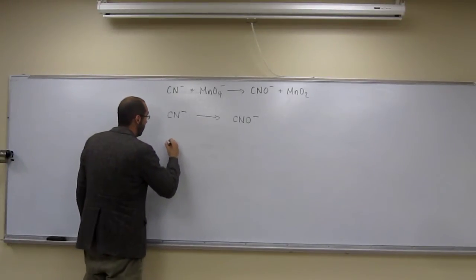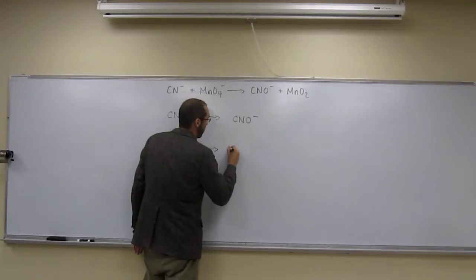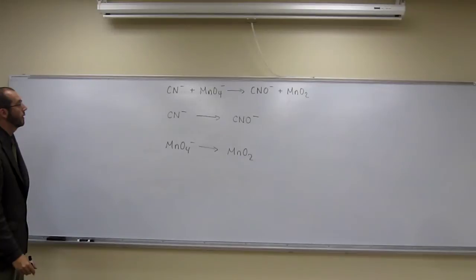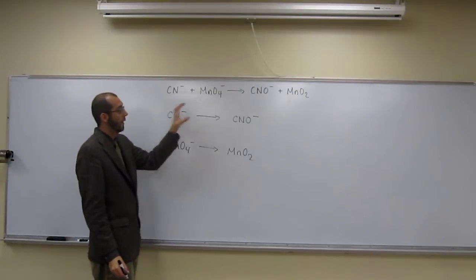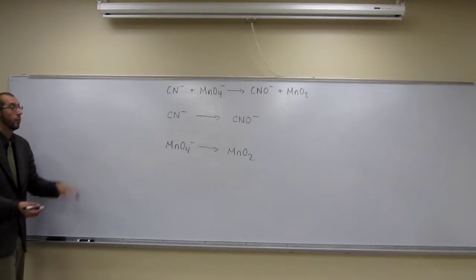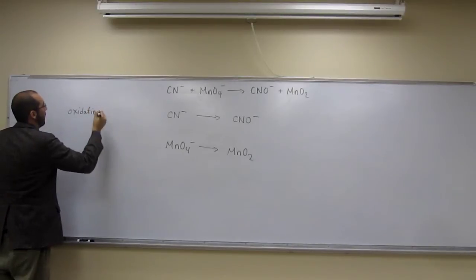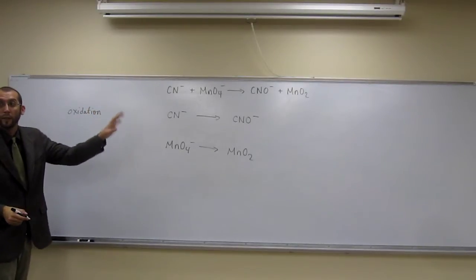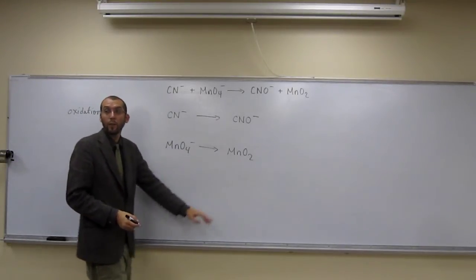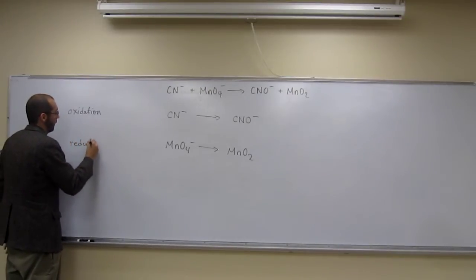So that's one of the reactions. The other one — the permanganate going to manganese dioxide. Hopefully you can see we're adding oxygens here, so that would be an indication of an oxidation reaction. I'm going to put 'oxidation' here. The other one, we can see we're losing oxygen, so that's another way to know that a reduction reaction is occurring.